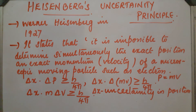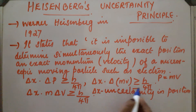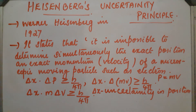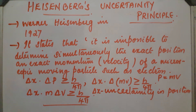What does this expression mean? It means that if we calculate the position of an electron with a high degree of accuracy, then the velocity will be uncertain. Or, if we calculate the velocity of the electron accurately, then the position will be uncertain. So it is impossible to determine simultaneously the exact position and exact momentum of a microscopic particle like an electron.